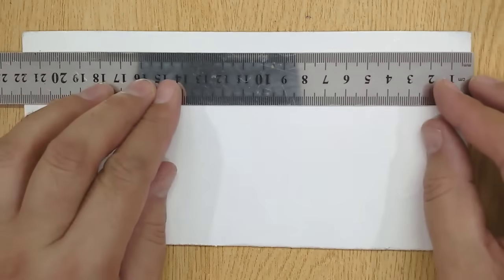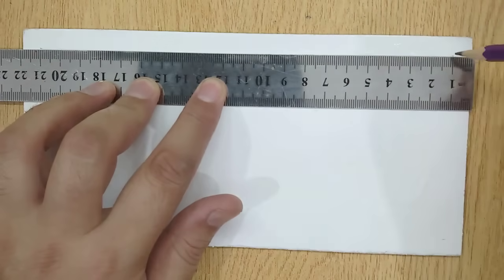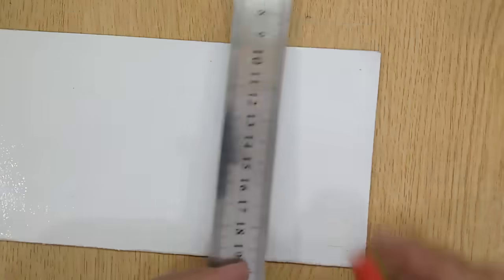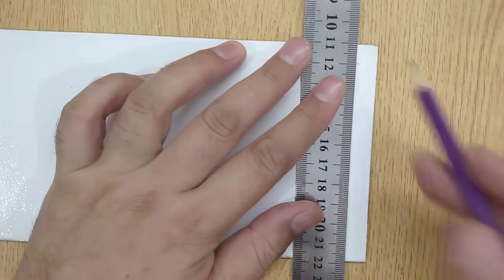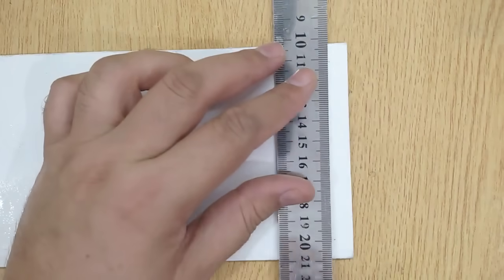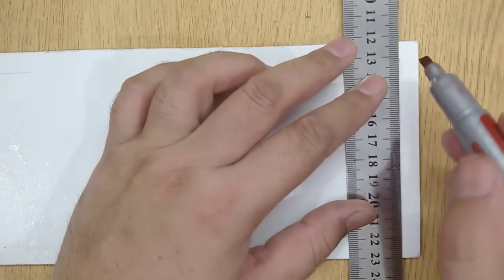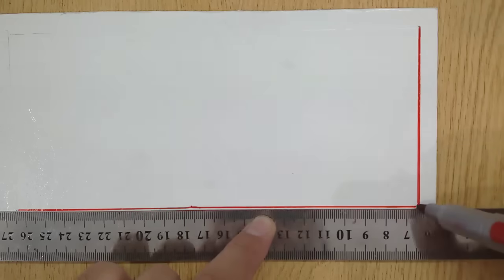Now draw all lines 1 cm from the sides using pencil. Then shade these lines using a permanent marker.